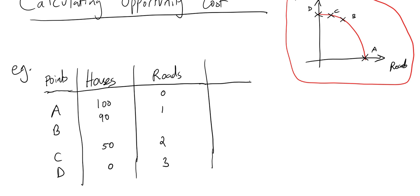Point A: 100 houses and 0 roads. Point B: 90 houses and 1 road. Point C: 50 houses and 2 roads. Point D: 0 houses and 3 roads.